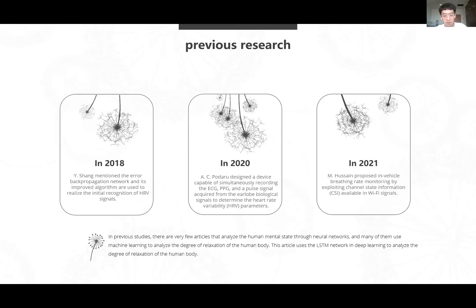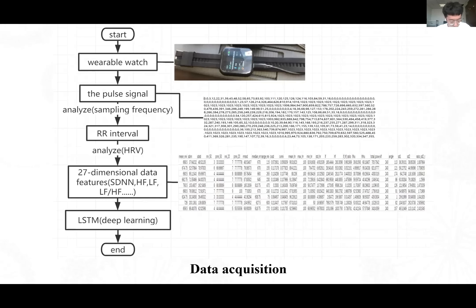This is our data acquisition process. The wearable smartwatch can obtain the pulse signal, and then analyze the pulse signal, we can get the RR interval. And then analyze the RR interval through the HRV, we finally get the 27 dimensional data features such as SDNN, HF, LF, and LF divided by HF.